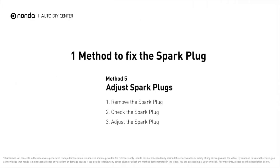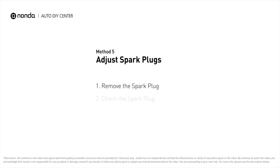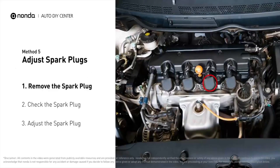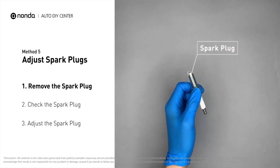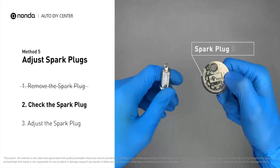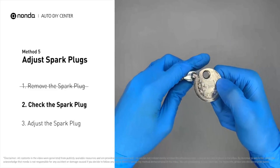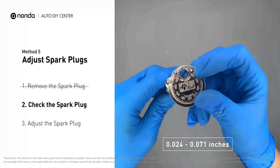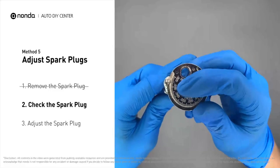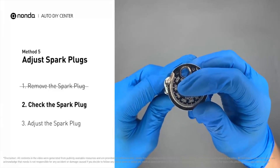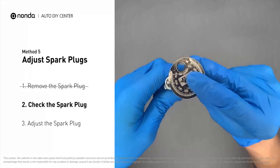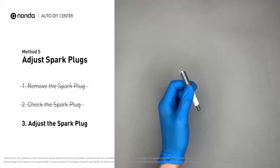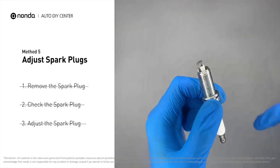Here is one method to fix the spark plug. Method five: adjust spark plugs. The spark plugs are located at the engine end of the wires under the plug covers. First, carefully remove the spark plug. Use a spark plug gapper to check the spacing — normally the spacing should be between 0.024 to 0.071 inches. If the spacing is low, use the spark plug gapper to increase it back to the normal range. If you see obvious damage on the spark plug, simply replace it with a new one.